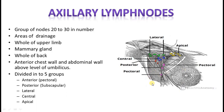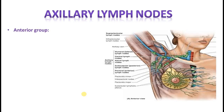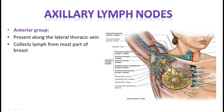Five groups of axillary lymph nodes are present: anterior group, posterior group, lateral group, central group, and apical group. The anterior group — also called the pectoral group — is present along the lateral thoracic vein and collects lymph mostly from the breast. The lymphatics of the breast drain into the anterior group, from there to the central group, and then to the apical group. The axillary tail of Spence, if present, will be closely related to the anterior group.